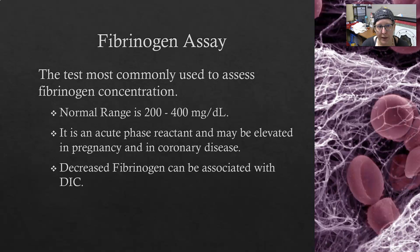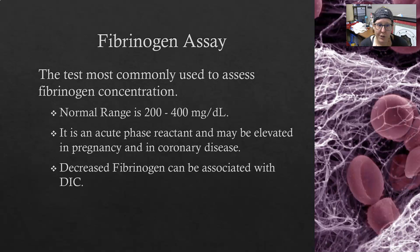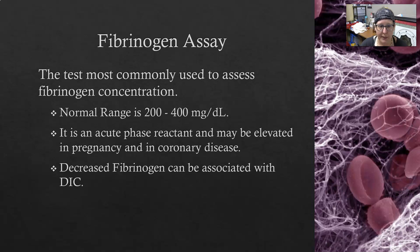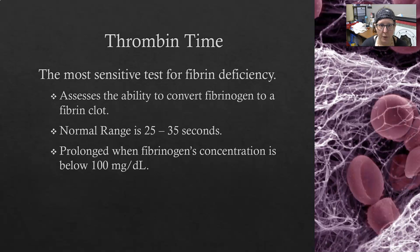The fibrinogen assay is the test most commonly used to assess fibrinogen concentration. Some fibrinogen is always present in inactive form, ready to be activated to fibrin. The normal range is 200 to 400 mg/dL. Fibrinogen is an acute phase reactant, meaning that during acute inflammation or acute illness or infection, fibrinogen levels go up. Fibrinogen levels can also be elevated in pregnancy and in coronary disease.